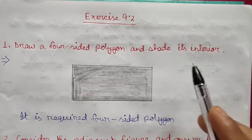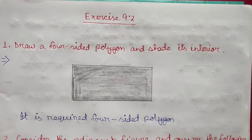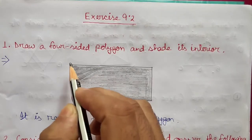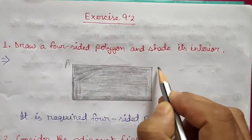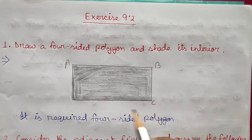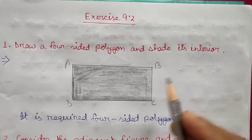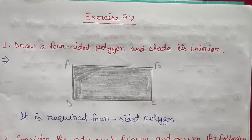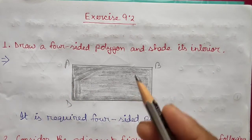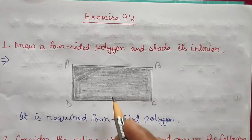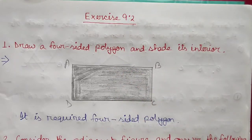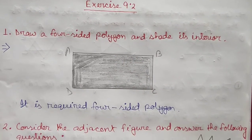So we have drawn a four-sided polygon and we can name it A, B, C, and D. Then we shade its interior. So the answer is this required polygon — this is the required answer for the first question.